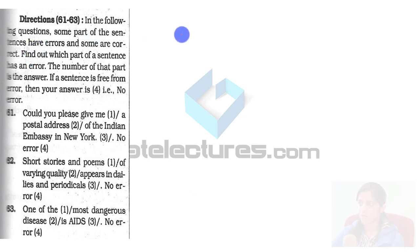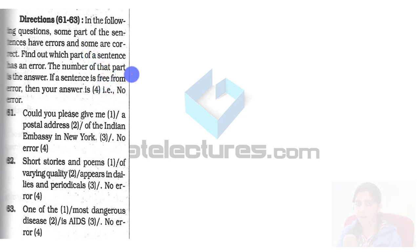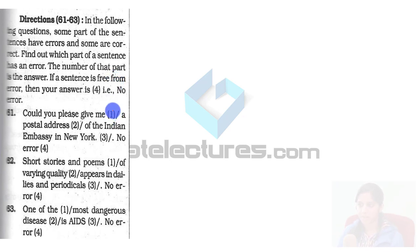Look at the first question. In the following question, some part of the sentence has errors. So, this is basically error correction. You have to find out which part of the sentence is having an error. Just select the part, and that number is going to be the answer.